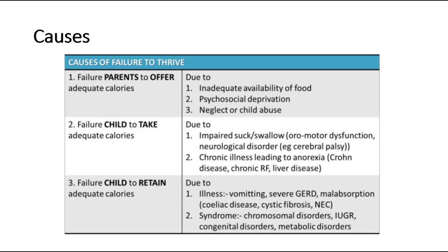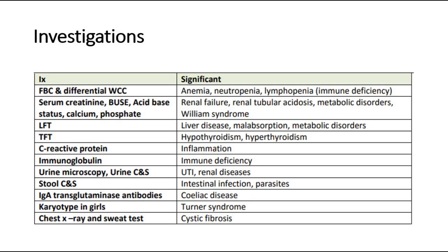The causes of failure to thrive include: failure of parents to offer adequate calories due to inadequate availability of food, psychosocial deprivation, neglect or child abuse; failure of the child to take adequate calories due to impaired sucking or swallowing, or chronic illness causing anorexia; and failure of the child to retain adequate calories due to vomiting, severe GERD, malabsorption, or other syndromic conditions.